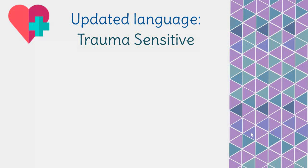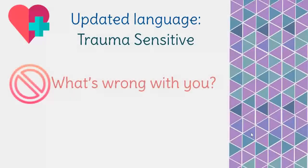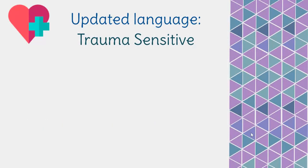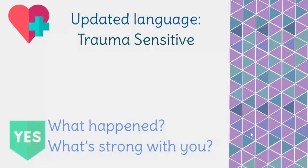We have updated our language from being trauma-informed to being trauma-sensitive. We've moved away from asking students 'what's wrong with you?' — that deficit model — to the strength-based model: 'What happened to you? What's strong with you?' The focus is on the strengths, on what the student can tell you about what's working for them and what coping strategies they have. I'm definitely moving from 'what's wrong with you' to 'what's strong with you.'